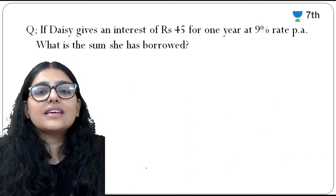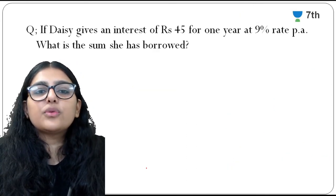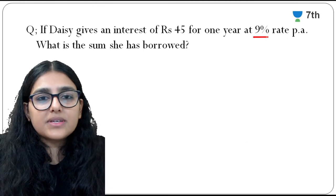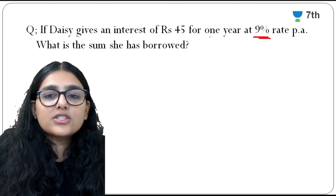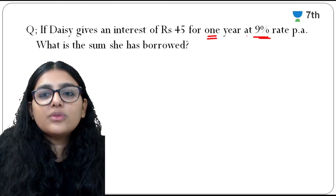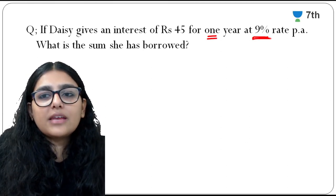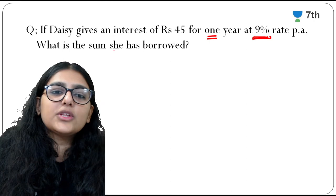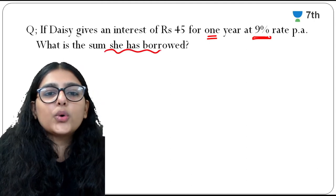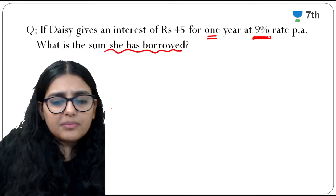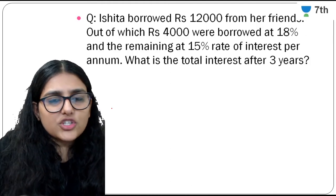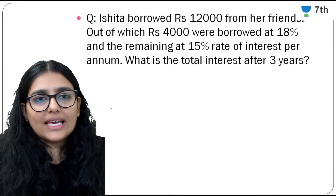Daisy also pays interest of Rs. 45 for one year at 9% per annum — same question. You can solve this yourself using the same formula to find how much she borrowed.